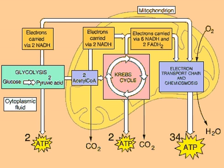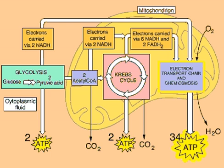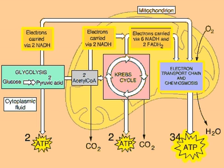This illustration summarizes cellular respiration. Glycolysis and the Krebs cycle produce a small amount of ATP via substrate-level phosphorylation, but most of the cell's ATP is made via electron transport and chemiosmosis. When NADH and FADH2, produced in glycolysis and the Krebs cycle, give up to oxygen the electrons obtained from organic molecules.